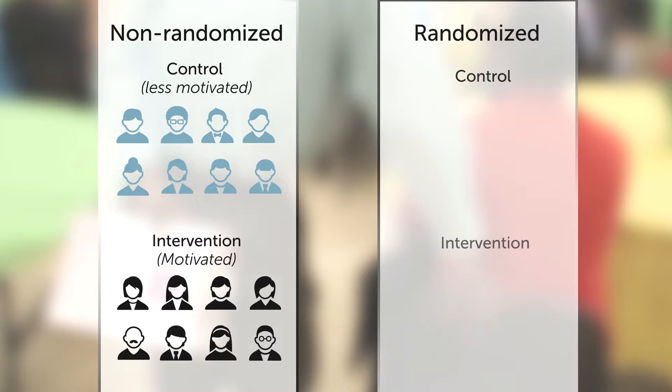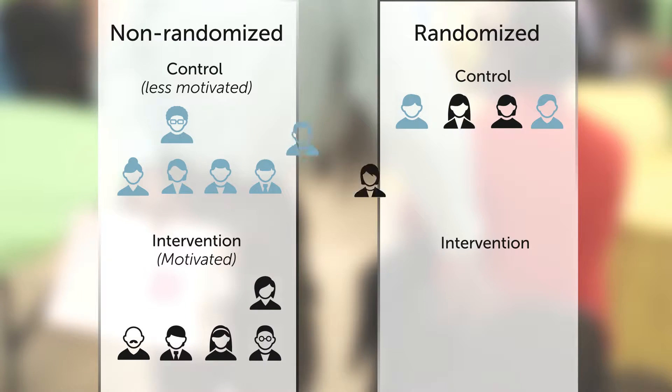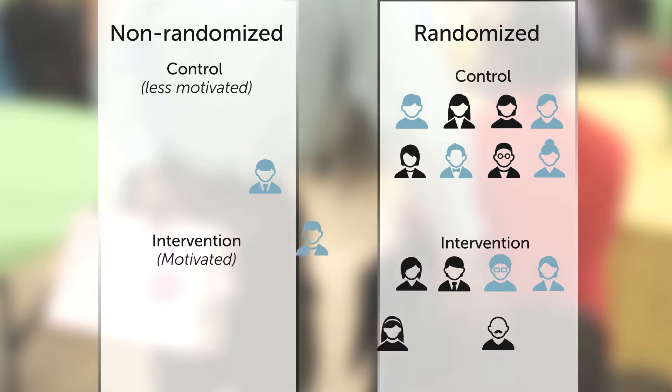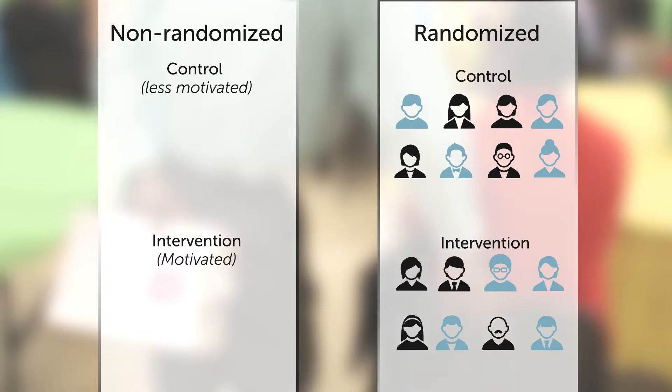Randomization ensures that characteristics like motivation are the same on average in the intervention and control groups. And this similarity is a distinguishing feature of randomized trials, the basis for making valid statements about causal effects.